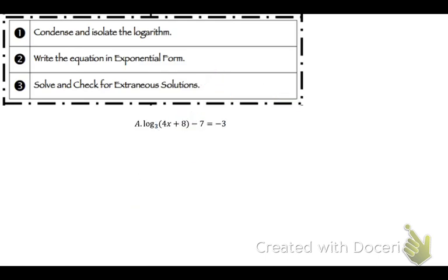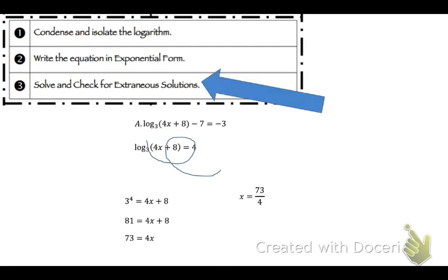This one. So we want to get that log by itself first. So we're going to add the 7 over. And we get log base 3 of 4x plus 8 equals 4. Change it. So 3 to the 4th power equals 4x plus 8. That's 81 equals 4x plus 8. 73 equals 4x. So x equals 73 over 4. Check for solutions. We're good.